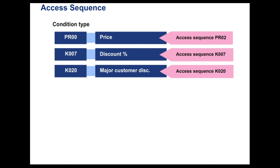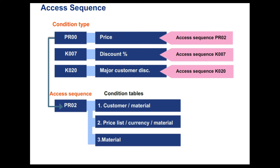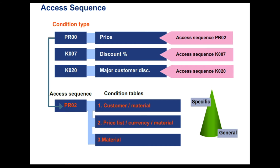An access sequence defines the search strategy to locate the proper conditioned record. Every condition type uses this access sequence to find out the conditioned record. There are three access sequences assigned to condition type P002: Customer/Material, Price list/Currency/Material, and Material. Normally, the access sequence is arranged from specific to general. The condition table is a combination of fields that form the key for a conditioned record.